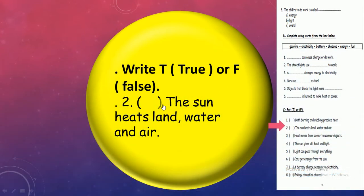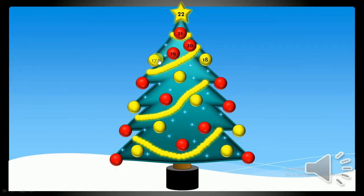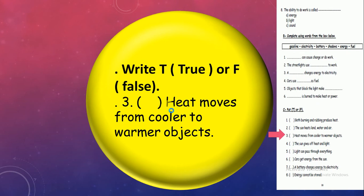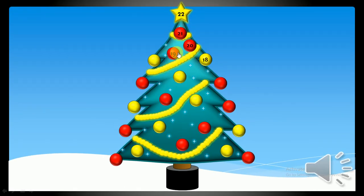Number 17. The sun heats land, water and air. True, yes. Okay, number 17. Heat moves from cooler to warmer objects. From cooler, do cooler places or objects have heat? No, so it can't move. So it's false. Heat moves from warmer or hot objects to cooler objects.